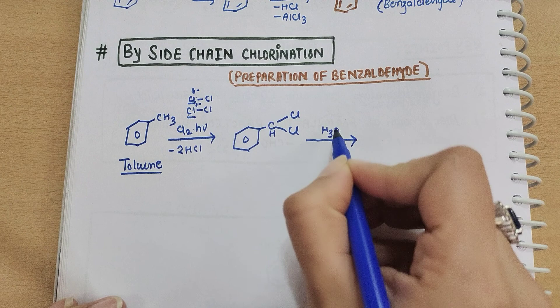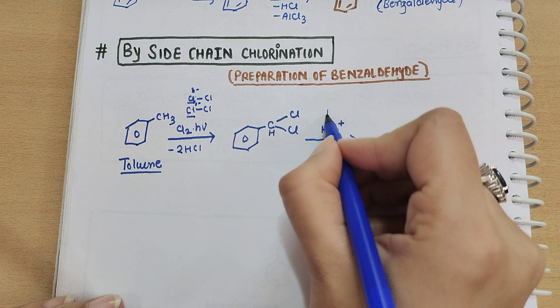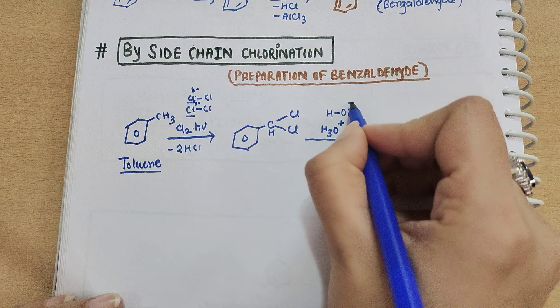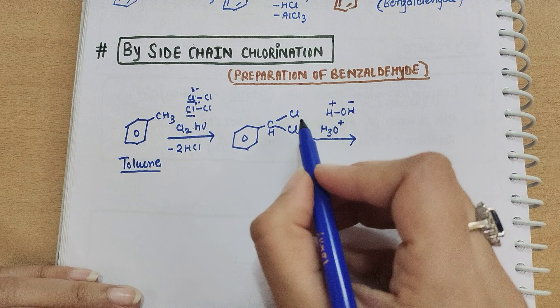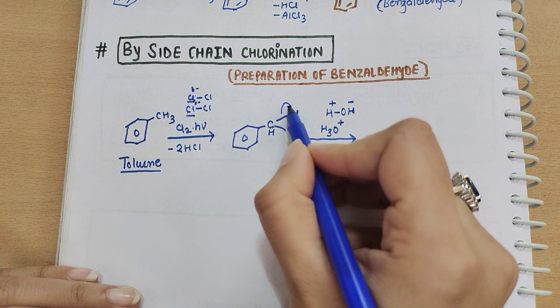Last step is the hydrolysis with H2O. You can also use H3O positive. H2O gives H and OH. Chlorine is more electronegative.